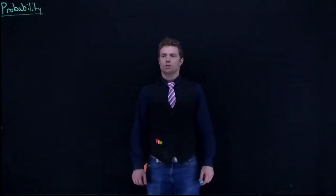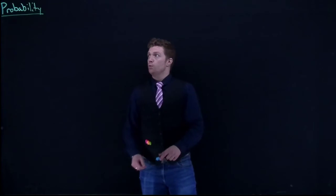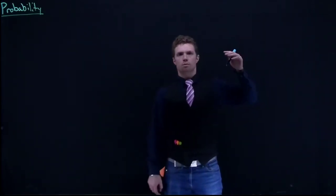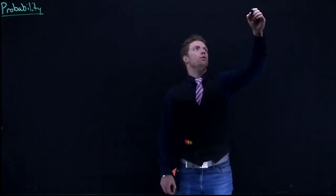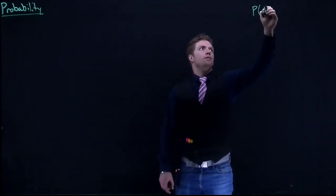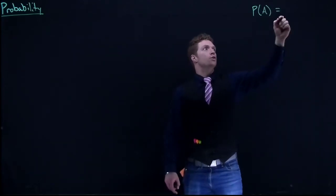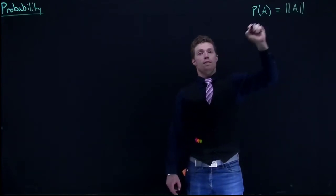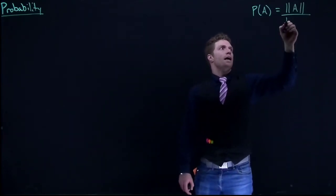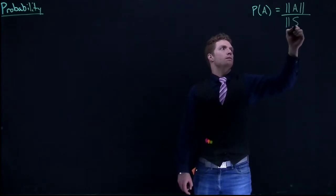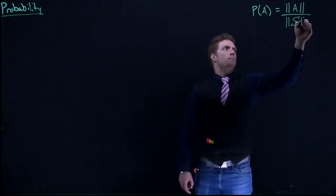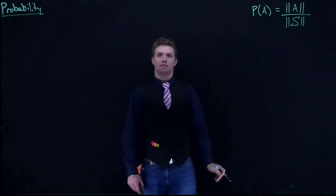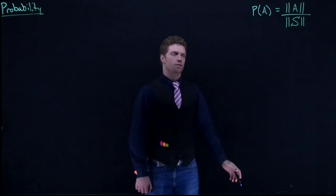Let's go ahead and continue our discussion on probability. We started off in our first video going through some steps so that we could get to this point where the probability of an event is equal to the number of outcomes in the event we're interested in divided by the number of outcomes in the sample space. I use some new symbols here — the double lines — which just means the number of outcomes within that specific event.